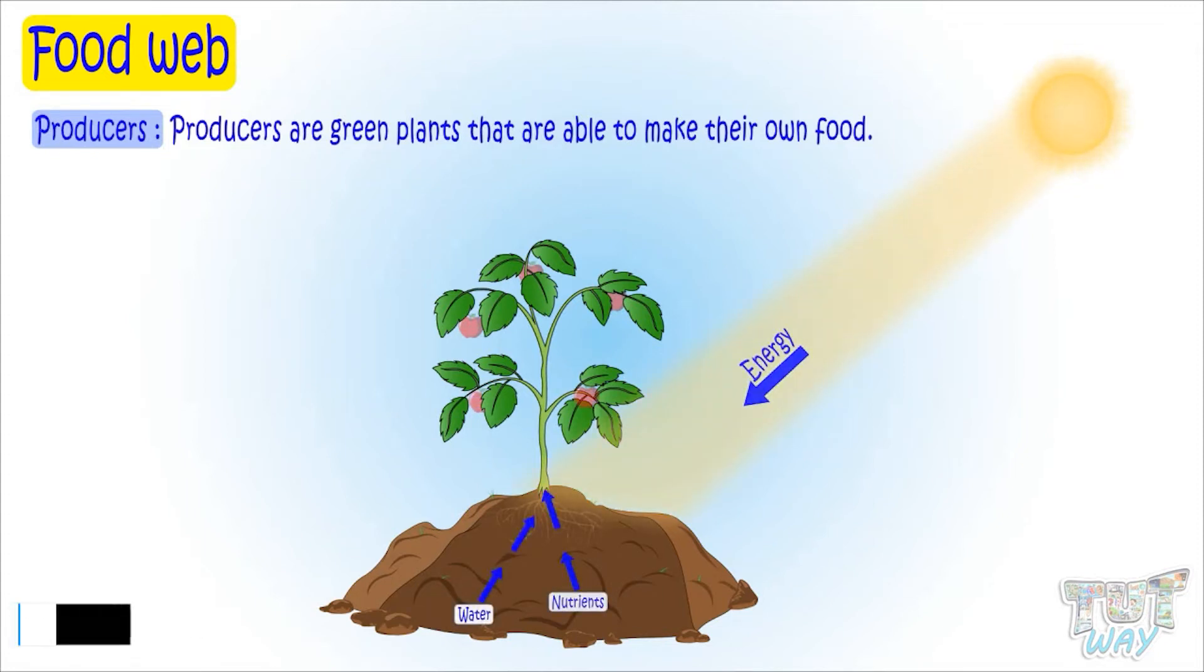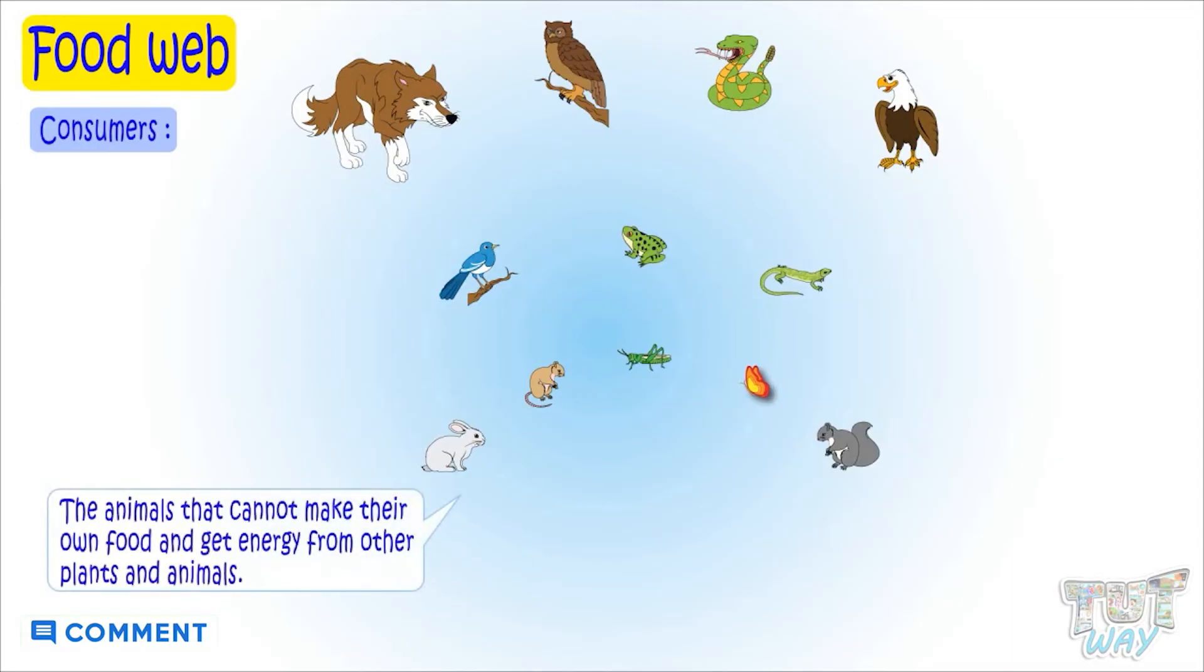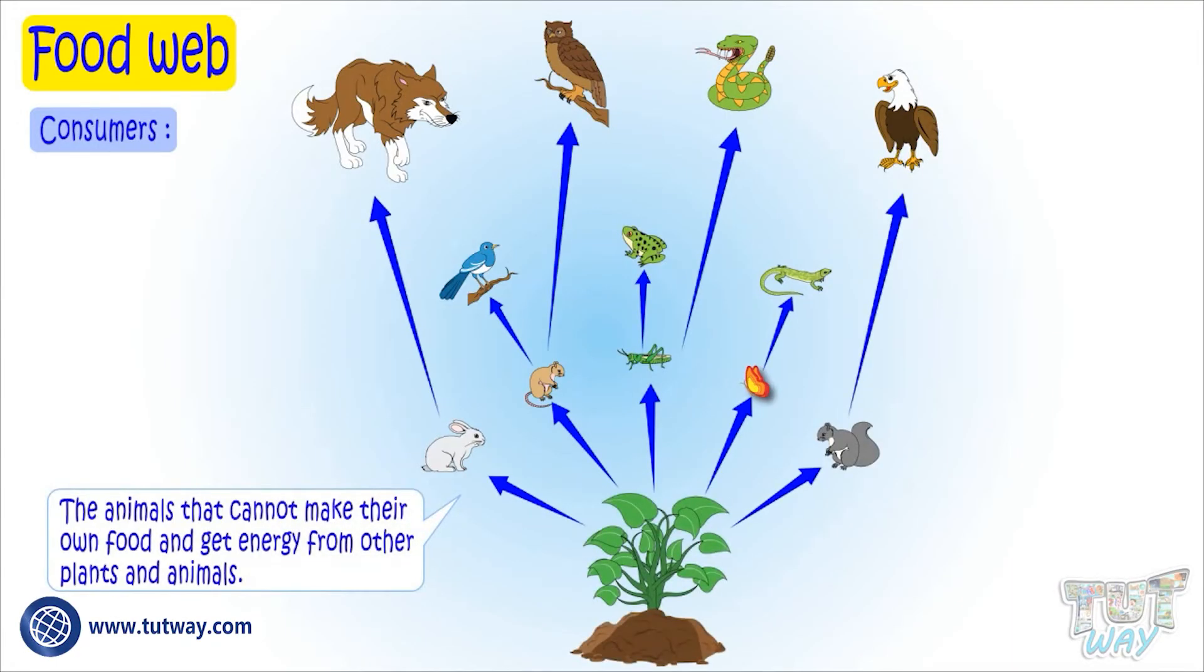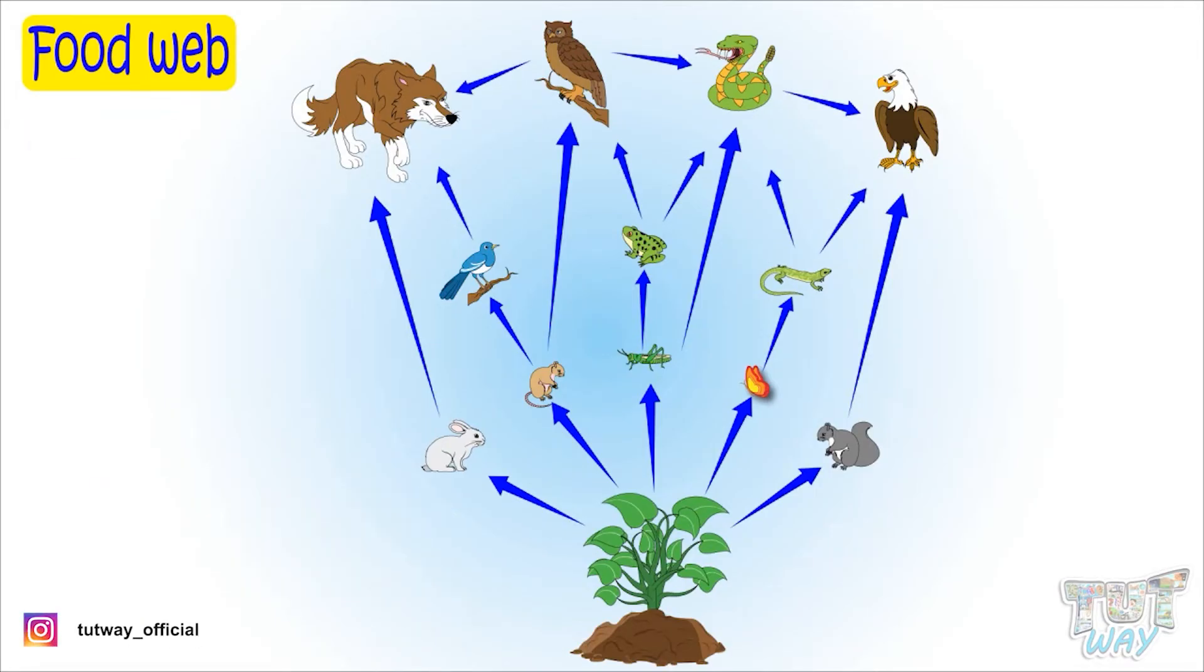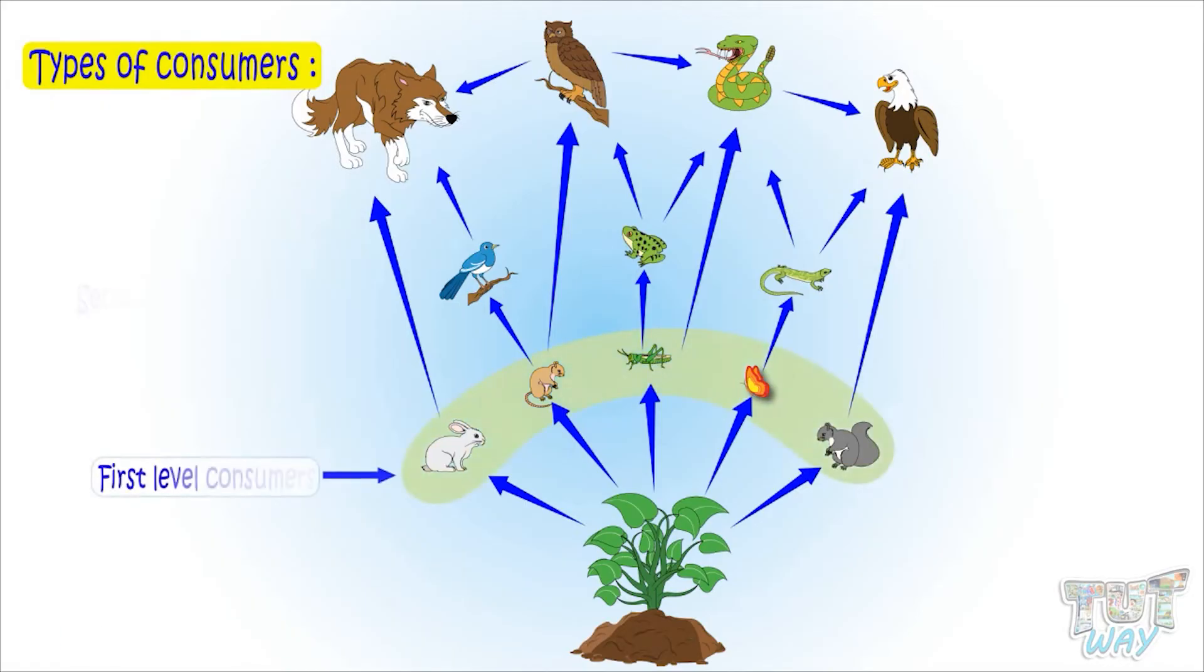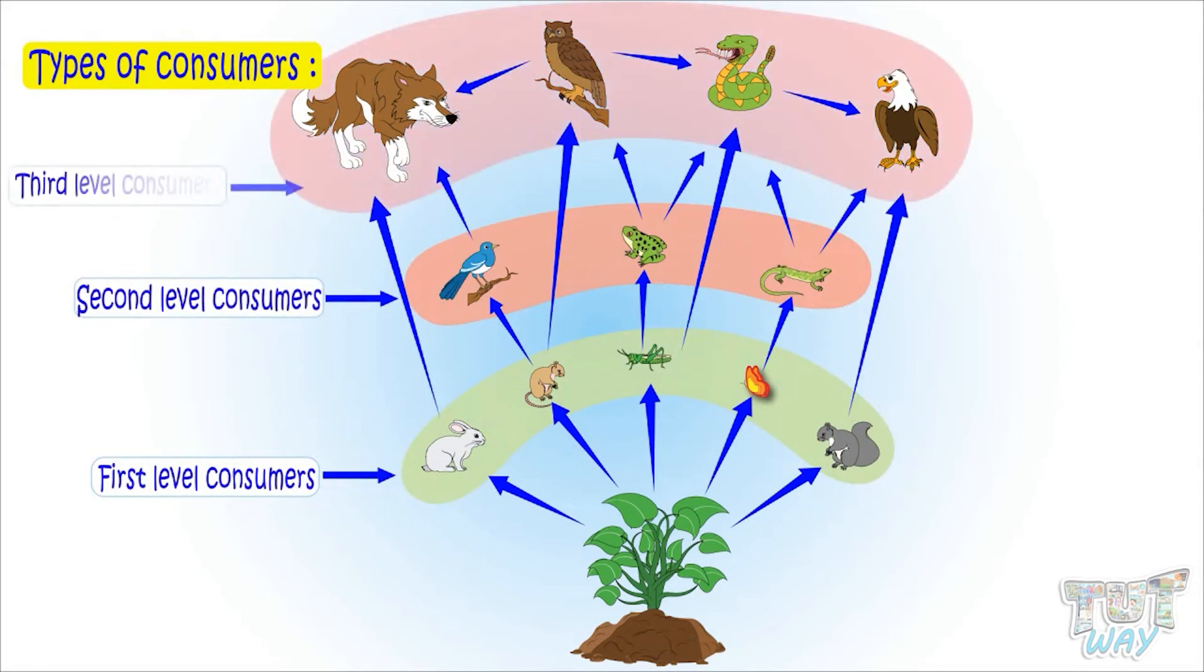Consumers are animals that cannot make their own food and get energy from other plants and animals. A food chain can have three to four consumers, and consumers are further classified into three types: first level consumers, second level consumers, and third level consumers.